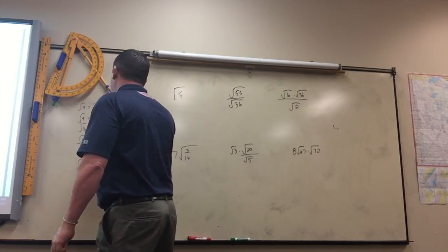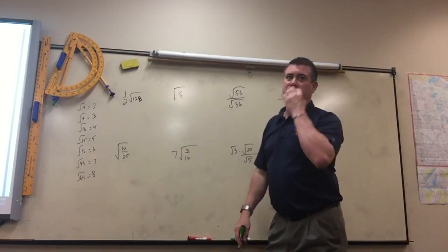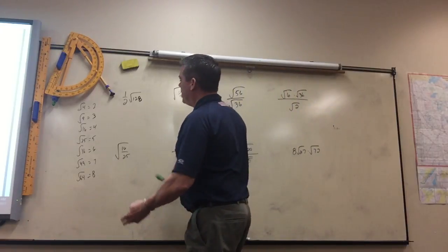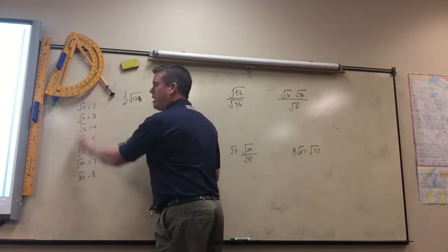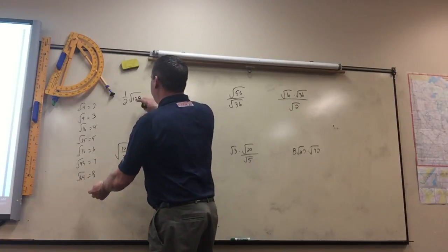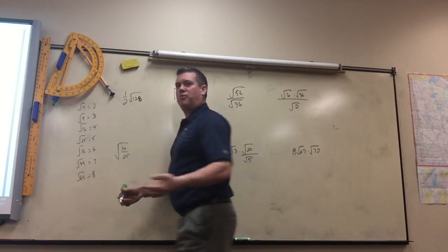And it would be 64 times 2. So if you don't know that, you always want to start about halfway and just start dividing. 128 divided by 64, you'll get 2.